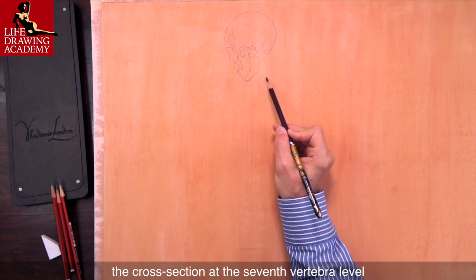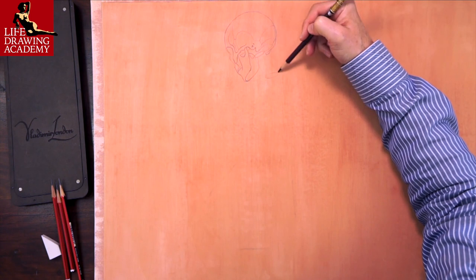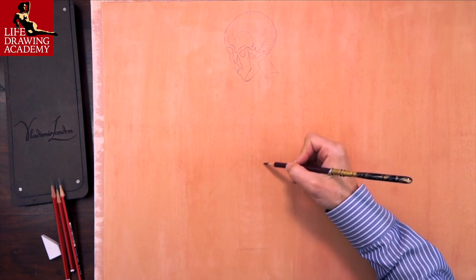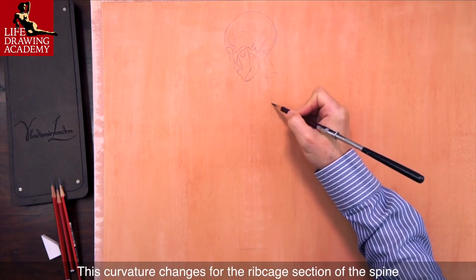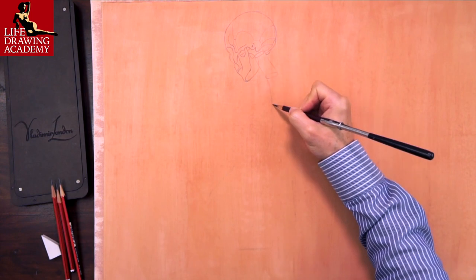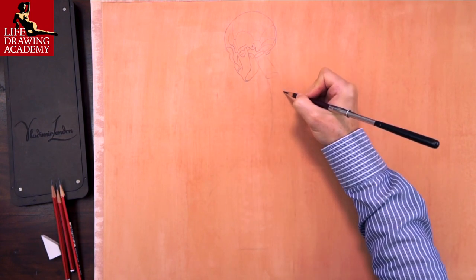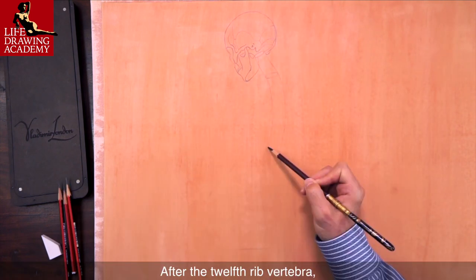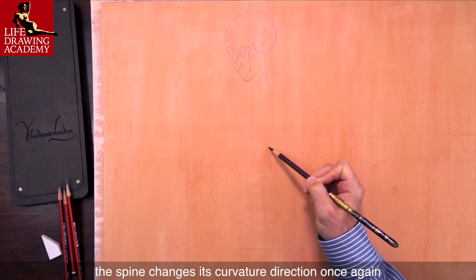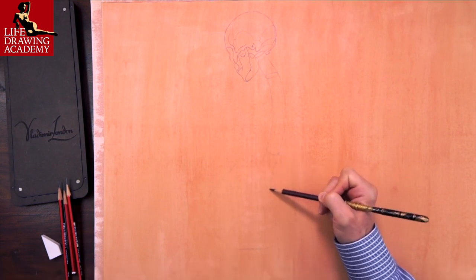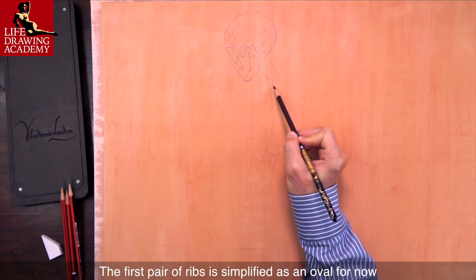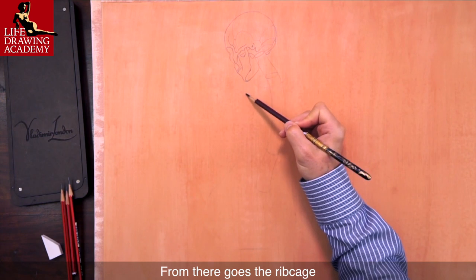I also mark as an oval the cross section at the 7th vertebra level. The next segment of the spine is curved forward. This curvature changes for the ribcage section of the spine. After the 12th rib vertebra, the spine changes its curvature direction once again. The first pair of ribs is simplified as an oval for now. From there goes the ribcage.